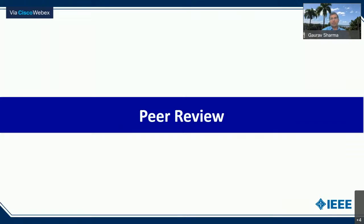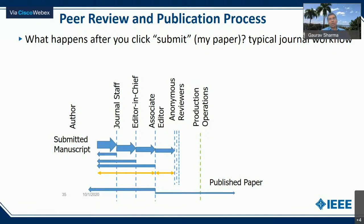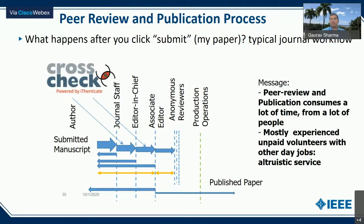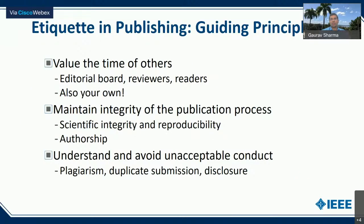What stands between you and getting published is the process of peer review. When you submit your paper, it goes through checks first by the journal staff, then by the editor-in-chief and associate editor. If it passes all these checks, it goes on to anonymous reviewers who provide feedback, which may then be conveyed to you to revise your paper. When you've met all requirements, the paper gets published. All people involved — the editor-in-chief, associate editor, and anonymous reviewers — are doing this as unpaid volunteers, contributing their time for the benefit of the community. Make sure what you submit is appropriately written and has gone through appropriate checks at your end.